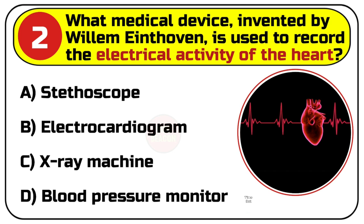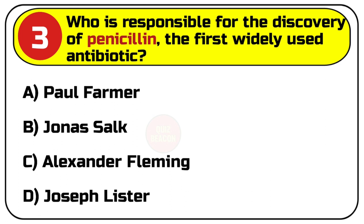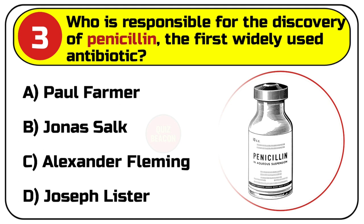Correct answer is B. Electrocardiogram. Question number 3. Who is responsible for the discovery of penicillin, the first widely used antibiotic? Options are: A. Paul Farmer, B. Jonas Salk, C. Alexander Fleming, D. Joseph Lister.